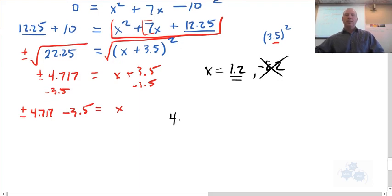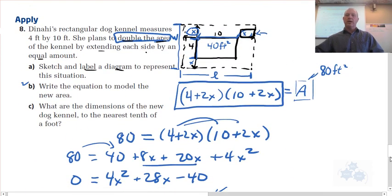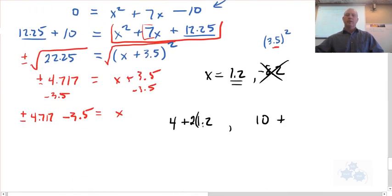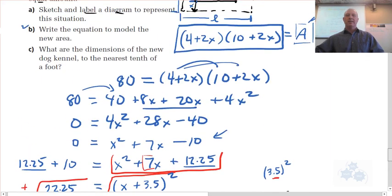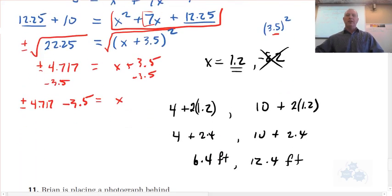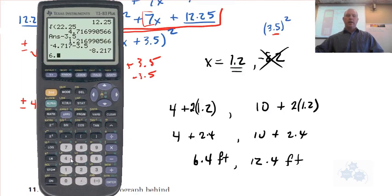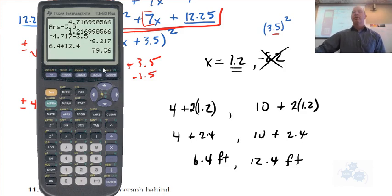So the new dimensions, again, it's 4 plus 1.2 and 10 plus... Well, actually, is that true? Wait a minute. No. 4 plus 2 times x. Here we go. So 4 plus 2.4 and 10 plus 2.4. This is 6.4 by 12.4. Now, we'll want to check that, okay? One way we can check that is by multiplying those two and see if they come to 80 or pretty close to 80. We've rounded, so does 6.4 times 12.4, let's see. That gets us pretty close to 80. Now, we've rounded these numbers, so that's pretty reasonable, 79.36.